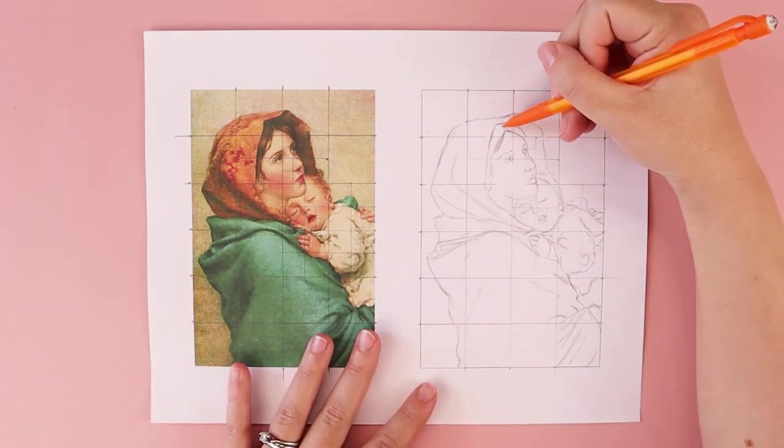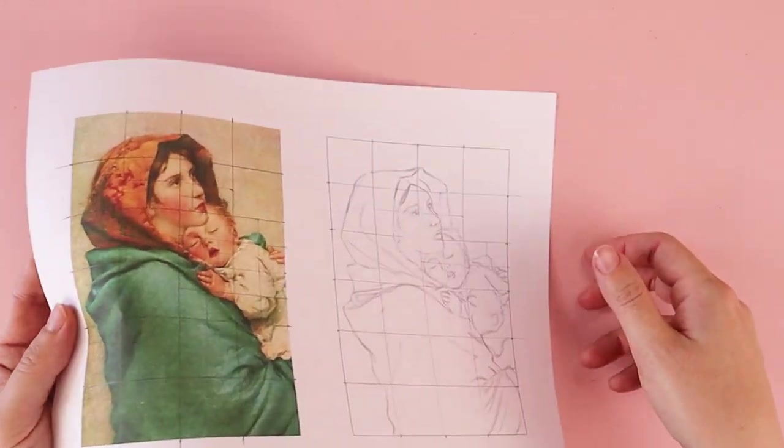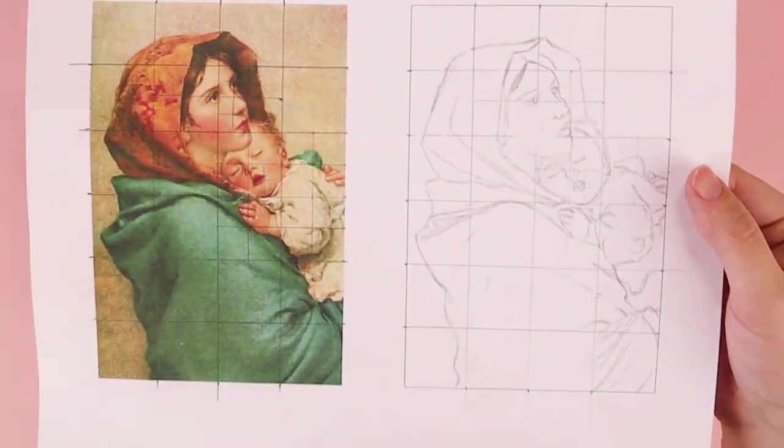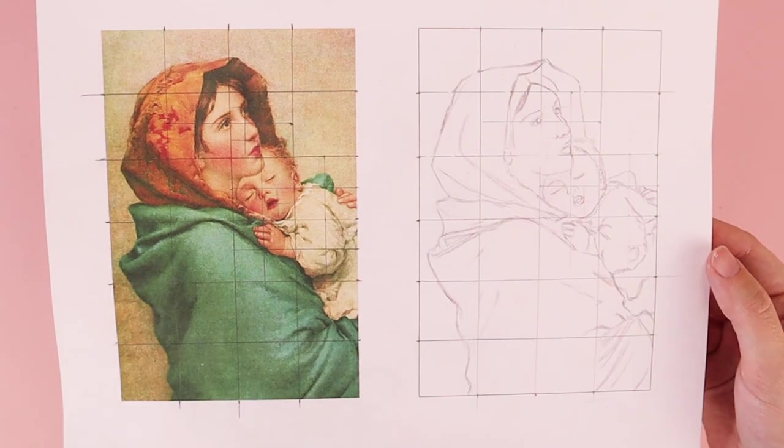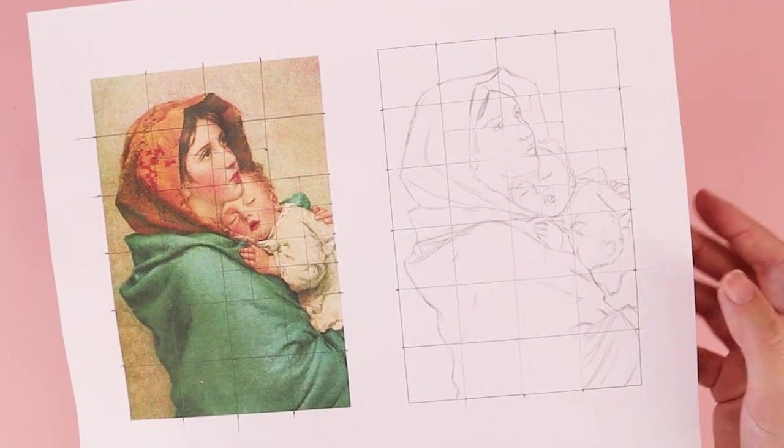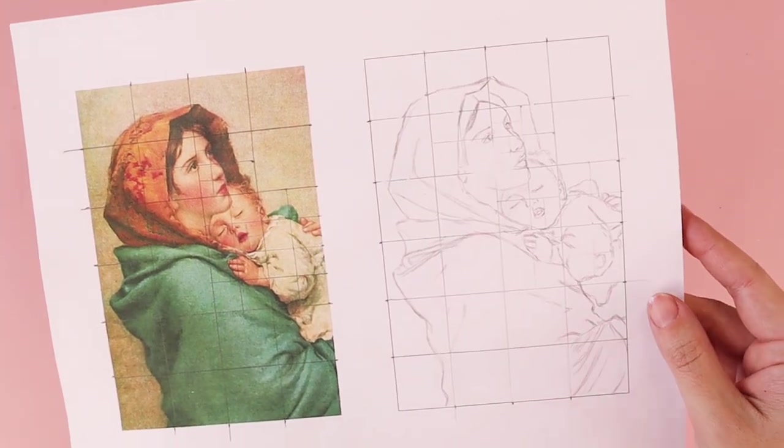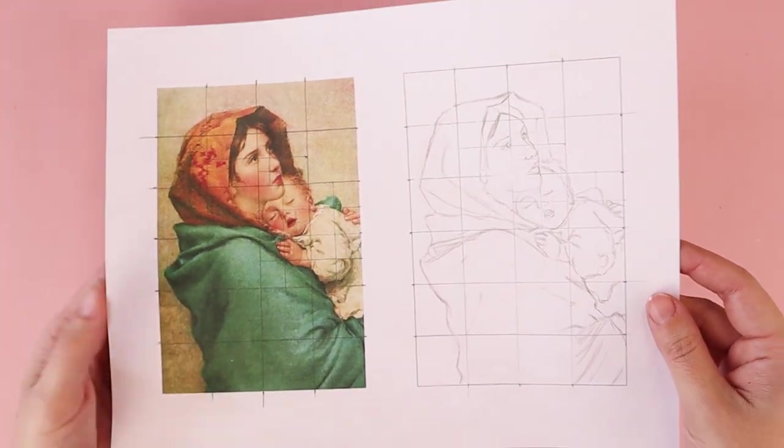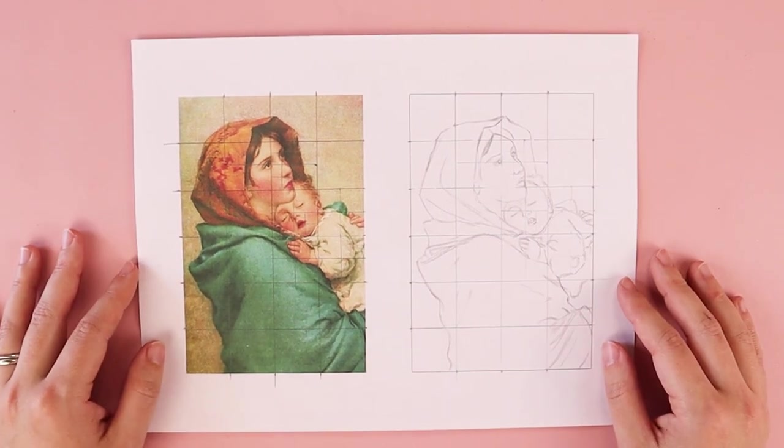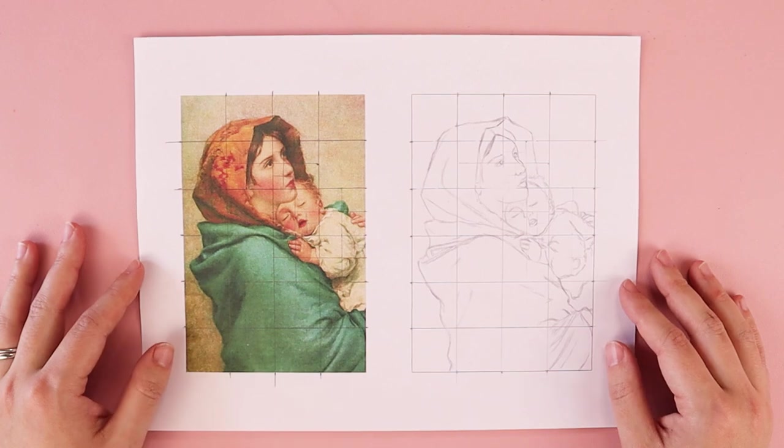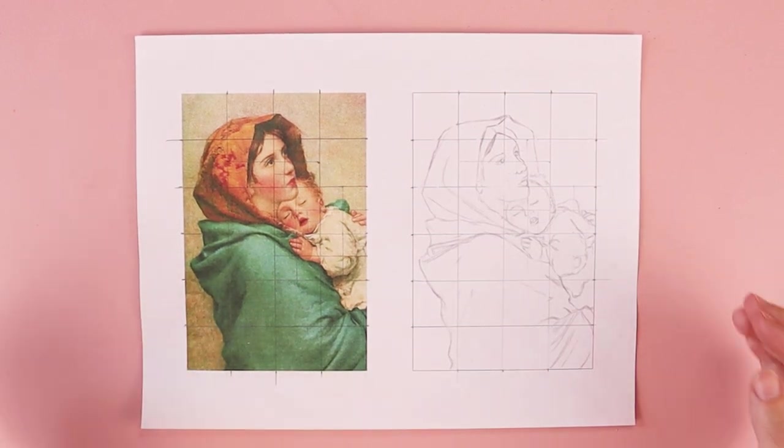So hopefully this was helpful in giving you an idea of one of many ways of drawing a little bit more realistically. The grid method is nice because it tricks my eye. It helps me figure out proportions a little bit better. And I feel like it's a great way to introduce young people into learning how to draw a little bit more realistically as well.